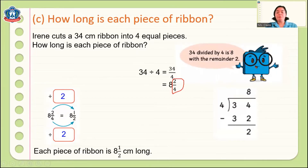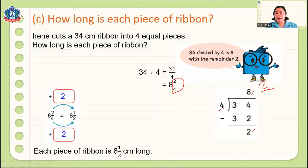How do we divide 34 by 4? Just like our previous lesson on dividing whole numbers by a single digit: 8 is our quotient, the remainder 2 becomes our numerator, and the divisor 4 becomes our denominator. This is how to divide numbers and get a fraction as a quotient.